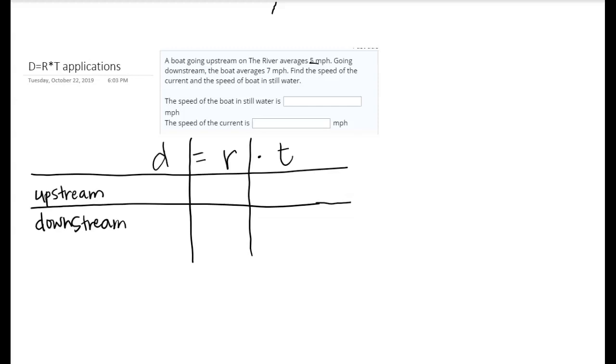I'm going to underline that since that's an important part. Going downstream the boat averages seven miles per hour. Find the speed of the current, so we want to know the speed of the current and the speed of the boat in still water.